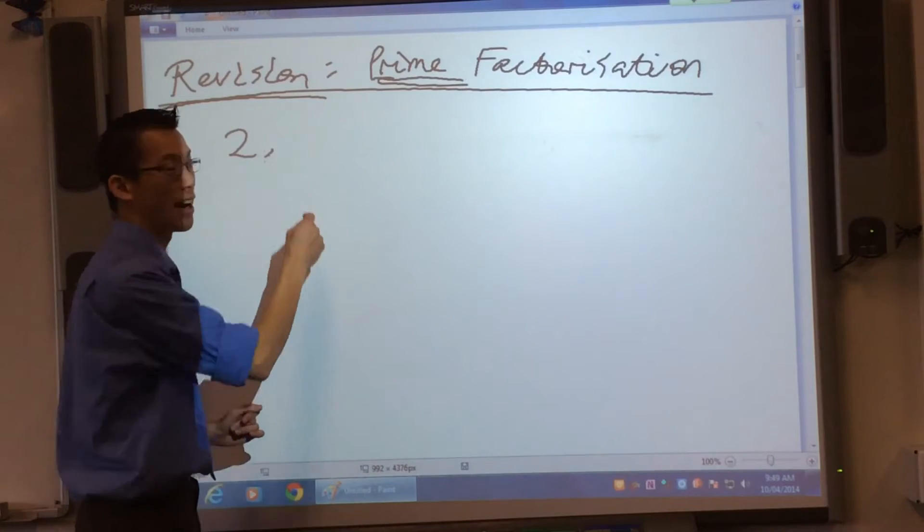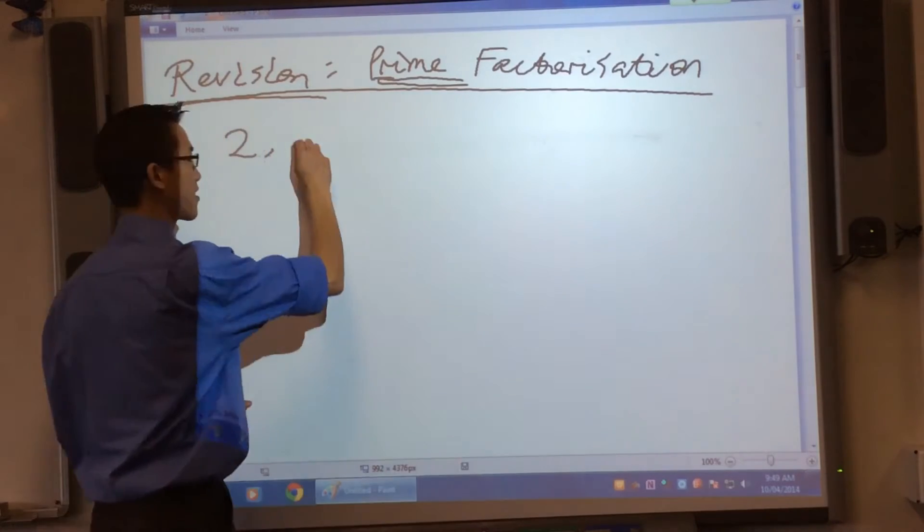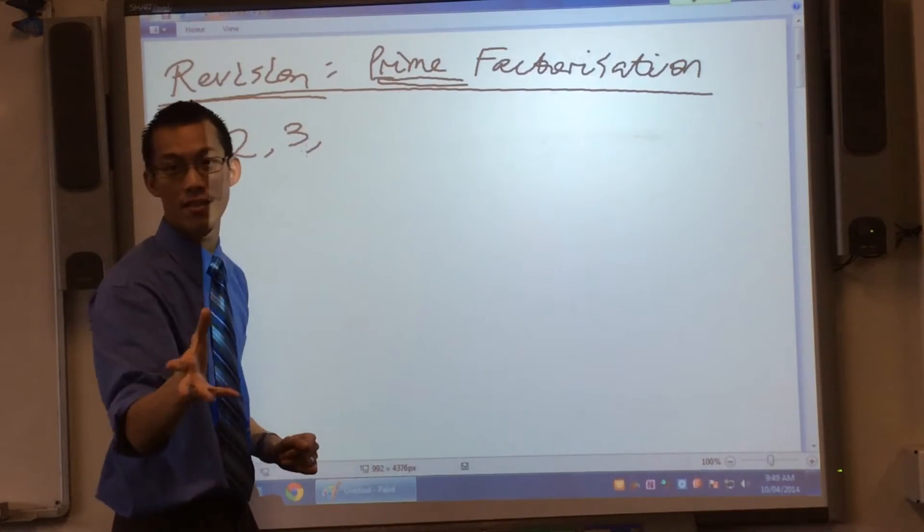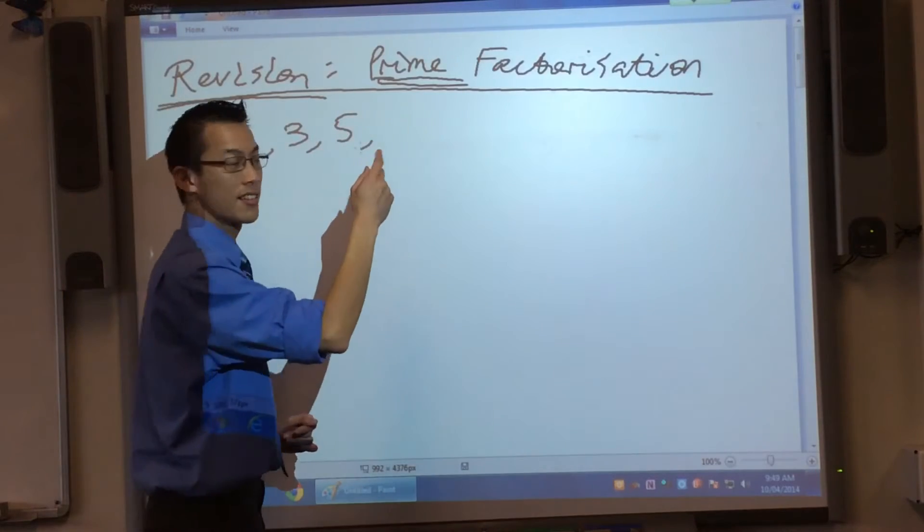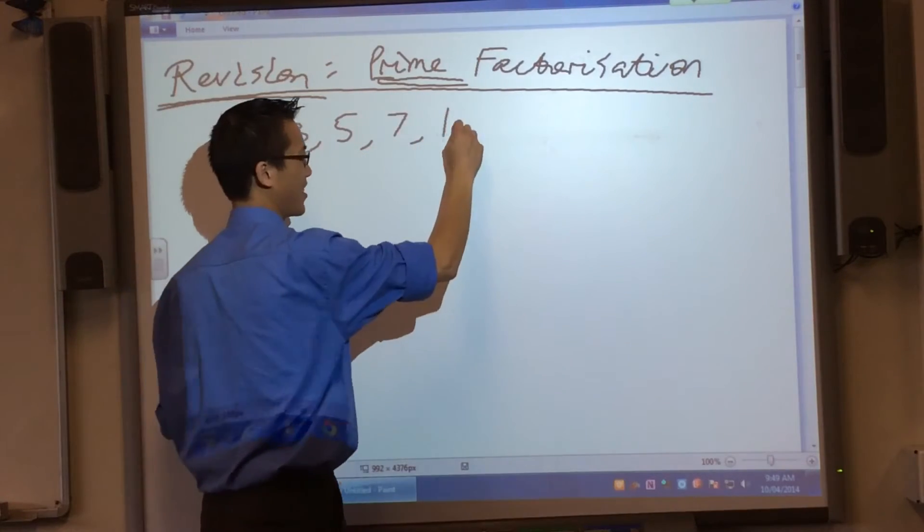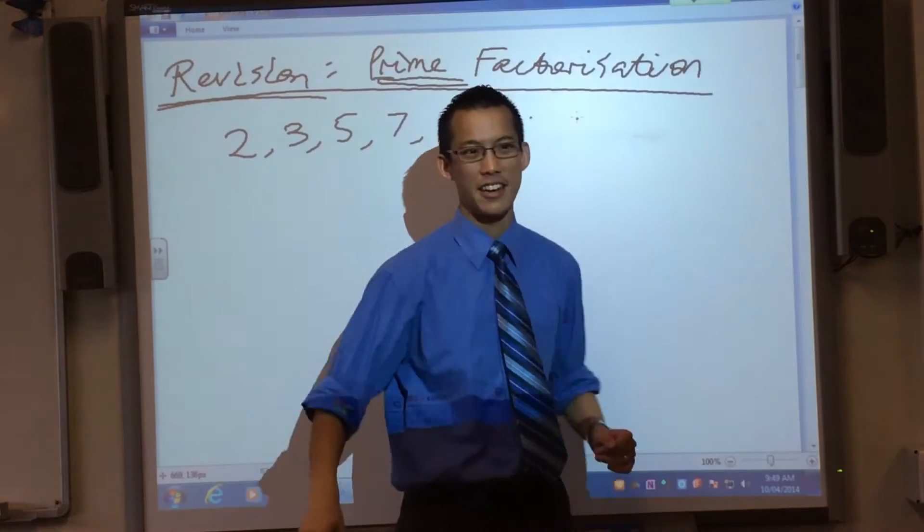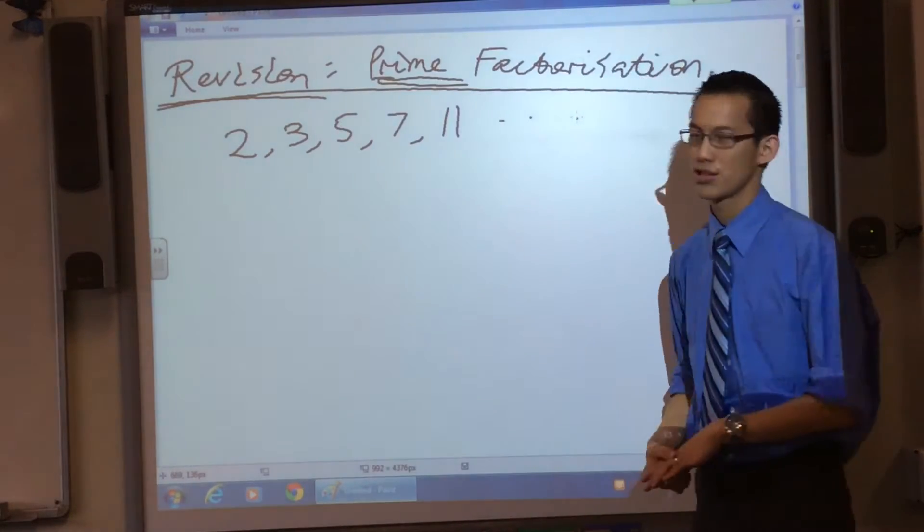Two. What's the next one? After two? Three. Three. And then? Five. Five. And then? Seven. And then? Nine. Eleven. Eleven. And then? Thirteen. You get the idea. Okay, shh. Good.